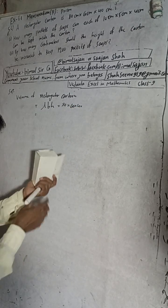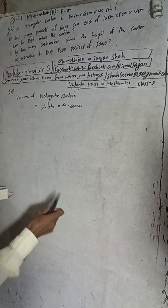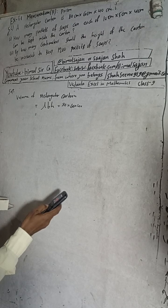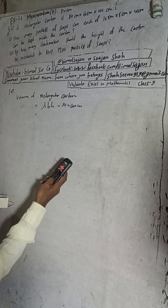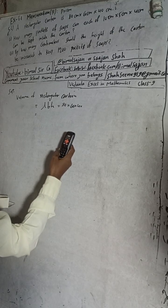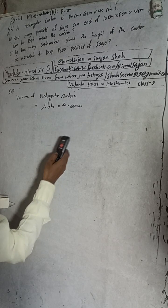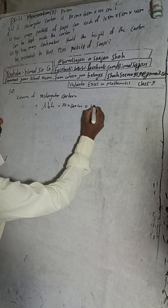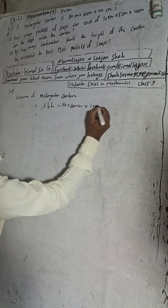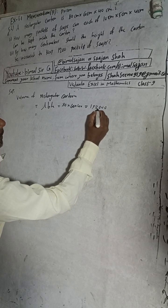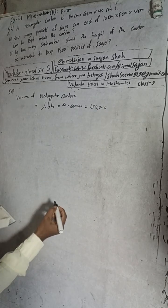So volume of the carton is L × B × H = 80 × 60 × 40. Now when we multiply: 80 × 60 = 4800, and 4800 × 40 = 192,000. So the volume of the rectangular carton is 192,000 cm³.